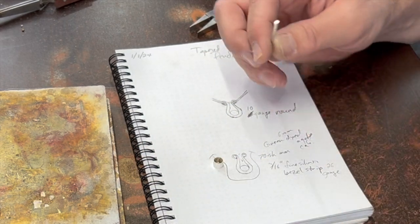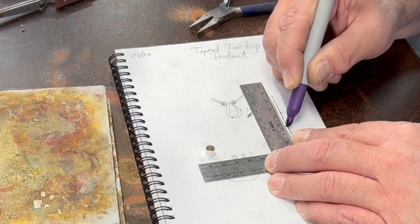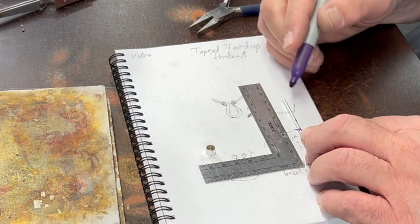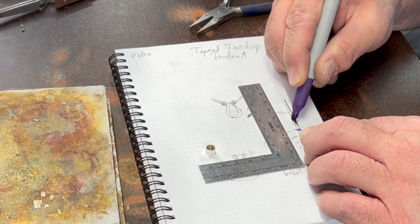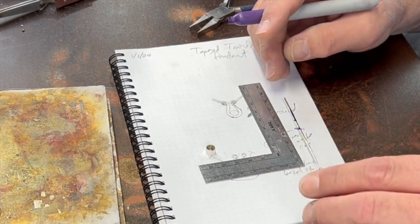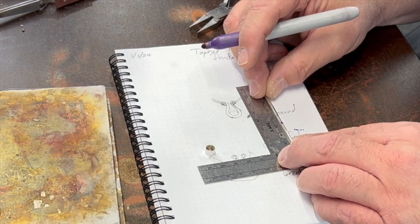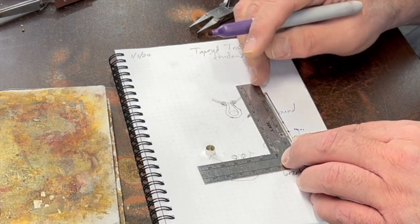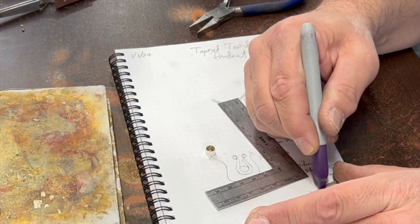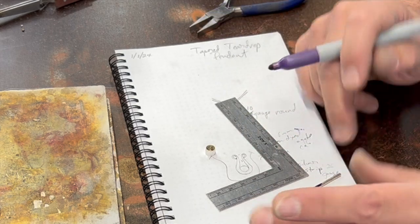I probably should decide where I really want the taper to start. Let's find the center here. That's about the center. Probably from about here down, about 10 millimeters. We'll start to taper about here. We'll leave this pretty much round and then just gradually taper this down.